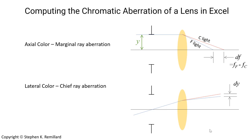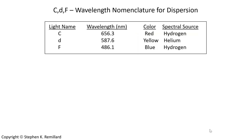Because chromatic aberration is caused by the dispersion of the glass, let's talk about the different wavelengths of light and how the glass responds to them. There are letters used for the names of various key wavelengths. In optical design, three important wavelengths are C light, D light, and F light — a lowercase d — and they have the colors of red, yellow, and blue. They historically get their names from the spectroscopy of hydrogen and helium.